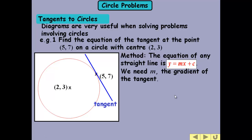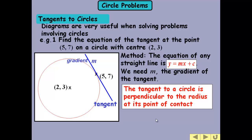So it's a straight line. We need the gradient. Because the tangent is perpendicular to the radius, if we work out the gradient of the radius between 2, 3 and 5, 7, we can then use the negative reciprocal of that, minus 1 over m if you like, to find the gradient of the tangent.